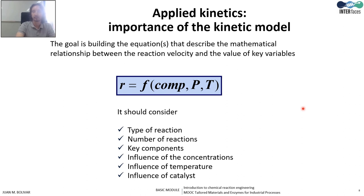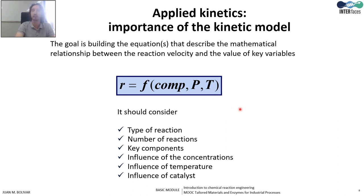The final goal of applied kinetics is to provide a kinetic model — an equation or set of equations that mathematically describes the reaction velocity and the influence of all relevant variables. In biocatalysis these normally include concentrations, temperature, pressure if a gas is present, and pH. To build this equation, we consider the features of the system: type of reaction, number of reactions, key components, influence of concentrations, influence of temperature, and influence of the catalyst.